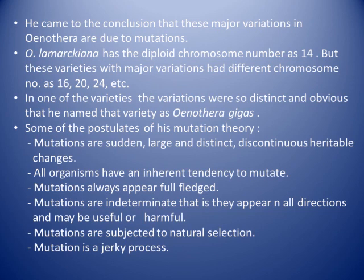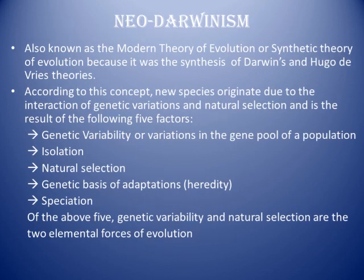Hugo de Vries had some postulates of his Mutation Theory. He said mutations are sudden, large, distinct, discontinuous, and heritable changes. All organisms have an inherent tendency to mutate. Mutations always appear full-fledged — there are no incipient or intermediate stages; it happens suddenly. Mutations are indeterminate, meaning they appear in all directions and may be useful or harmful. Those that are harmful are removed by natural selection; the useful ones are inherited by offspring. Mutation is a very jerky process.